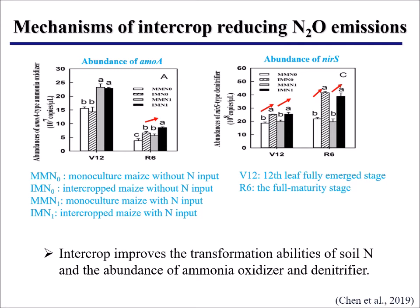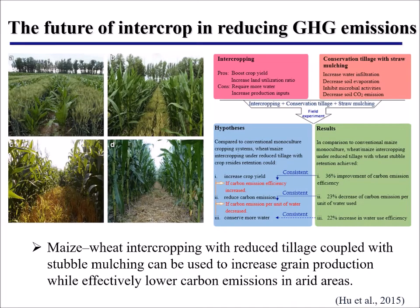In summary, intercropping has a strong capacity to reduce CO2 and N2O emissions while sequestering more carbon into the soils. In practice, intercropping is often combined with other management approaches such as conservation tillage and straw mulching. By combining all these carbon-negative management practices, they can increase grain production while also lowering carbon emissions in these arid areas.